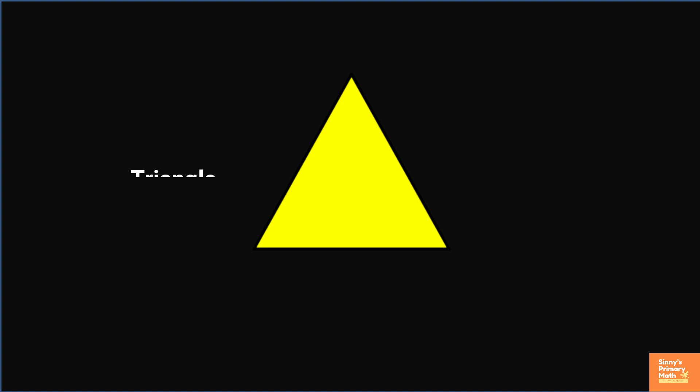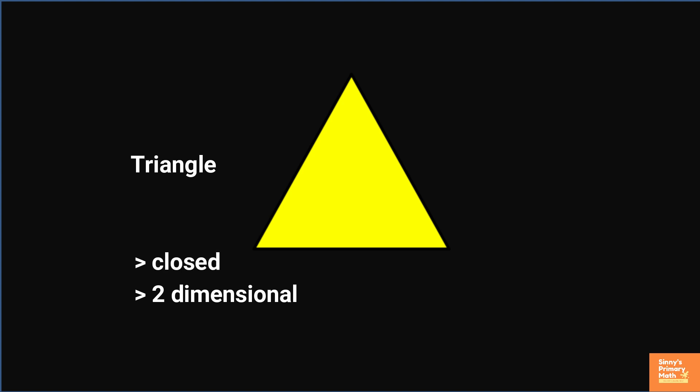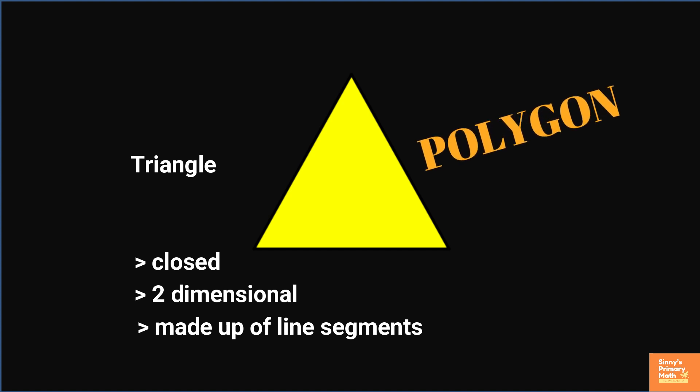Let us examine the first figure. Figure 1 is a triangle, which is a 2-dimensional figure. It has no open sides — that is, it is a closed figure. The three sides are made up of line segments. A simple closed figure made up entirely of line segments is called a polygon. So, Figure 1 is a polygon.